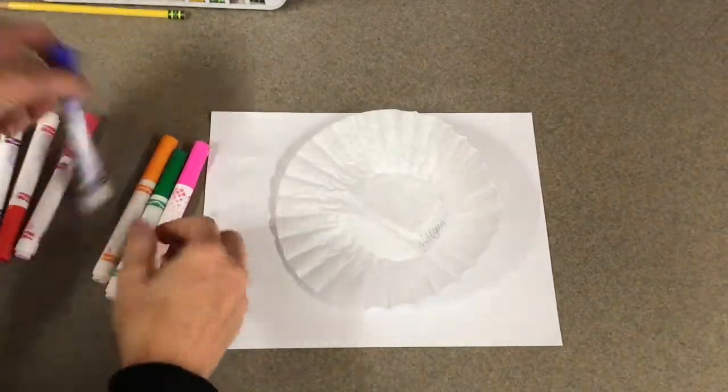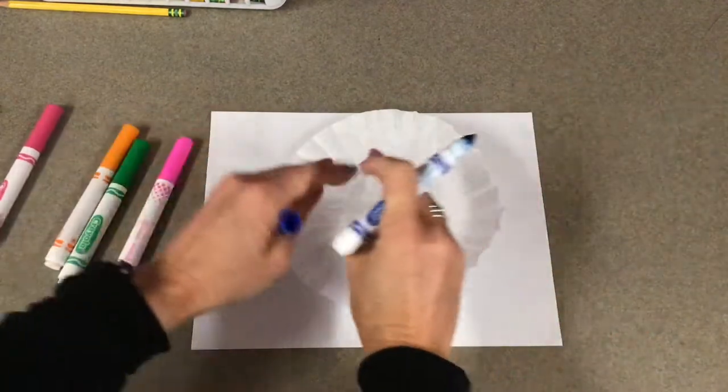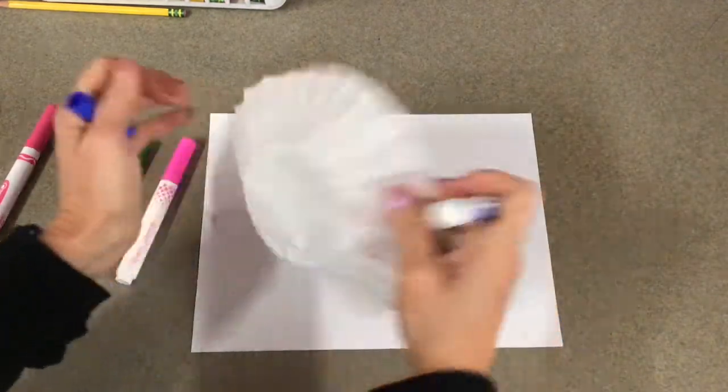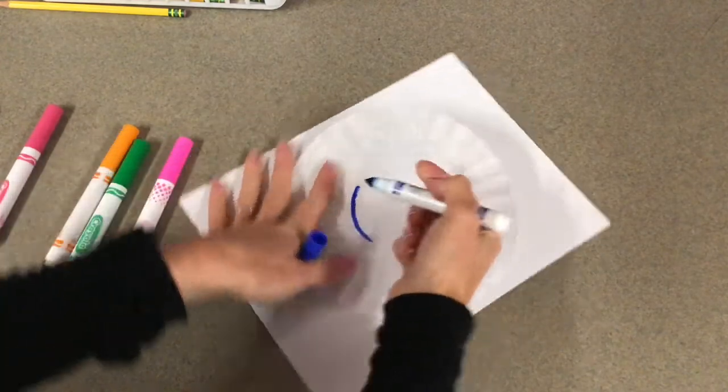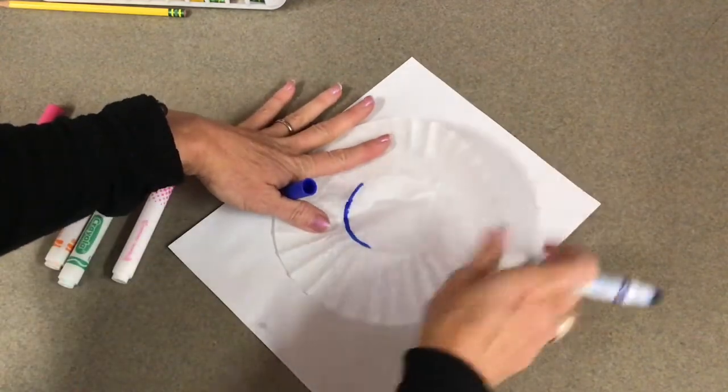You have a scrap piece of paper that's underneath your coffee filter. You're going to turn over your coffee filter, have it nice and flat, and you're going to make a circle around the center using your marker. Take your time.